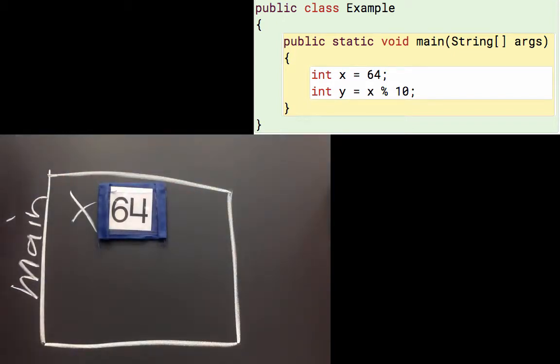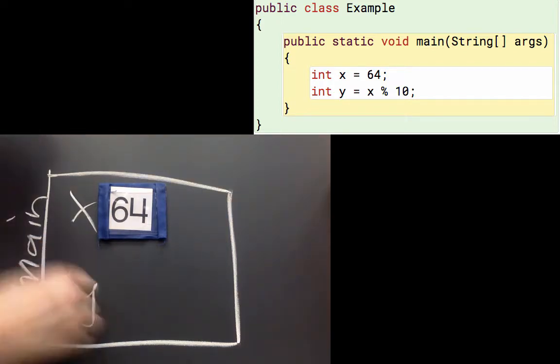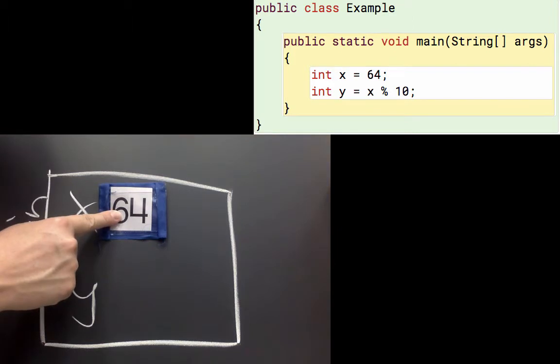The next line says int y gets the value of x mod 10. Remember that percent sign is mod or modulo, and what that's doing is calculating the remainder. So the variable y gets the value of x mod 10.